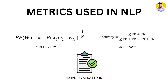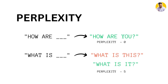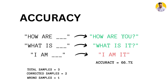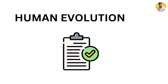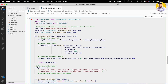Perplexity measures how well a language model predicts a sequence of words — the lower the perplexity, the better the language model. Accuracy measures how many of the generated responses are correct, while human evaluation involves having humans rate the quality of the responses.